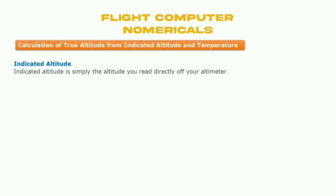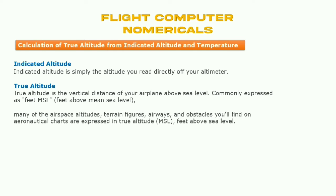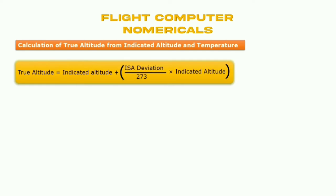Indicated altitude is simply the altitude you read on the altimeter. True altitude is the vertical distance of the aeroplane above mean sea level. Many aerospace altitudes and airways obstacles found on aeronautical charts are expressed in true altitude. The formula is displayed on screen — please remember this formula. Now we'll talk about temperature deviation.